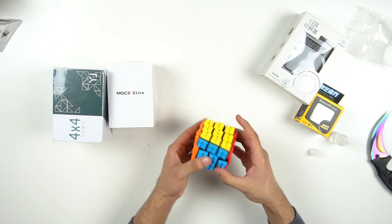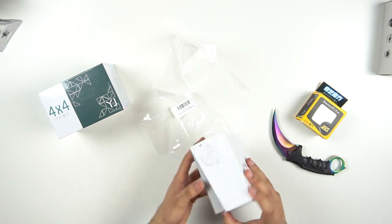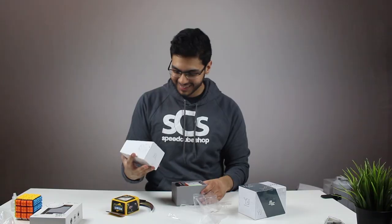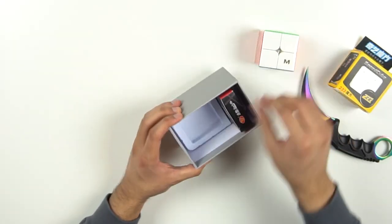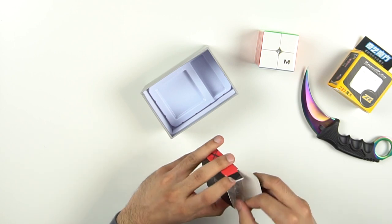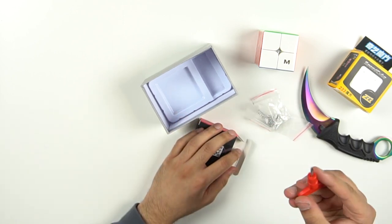So we'll try out the YJ timer after I unbox these cubes, because then we can actually speed solve them. Interesting box. Okay cool, it's just got like one corner. That's not useful to me at all. Cool, so inside the box we got the cube, we got some box full of springs, and interesting, a really cool looking screwdriver by YJ.